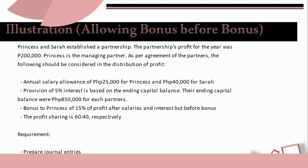Next illustration: Princess and Sarah established a partnership. The partnership's profit for the year was P200,000. Princess is the managing partner. As per agreement of the partners, the following should be considered in the distribution of profit: annual salary allowance of P25,000 for Princess and P40,000 for Sarah. Provision of 5% interest based on their ending capital balance — P850,000 for each partner. Bonus to Princess of 15% of profit after salaries and interest, but before bonus. The profit sharing is 60-40 respectively. Requirement: prepare journal entries.